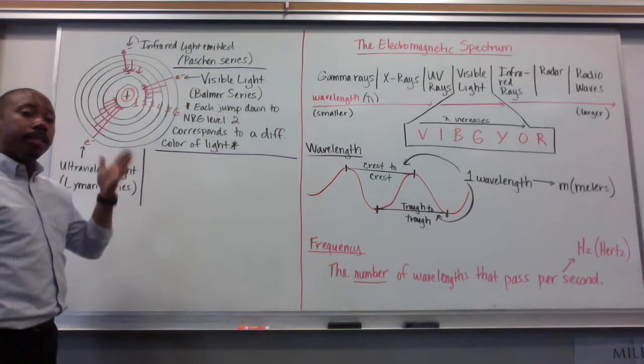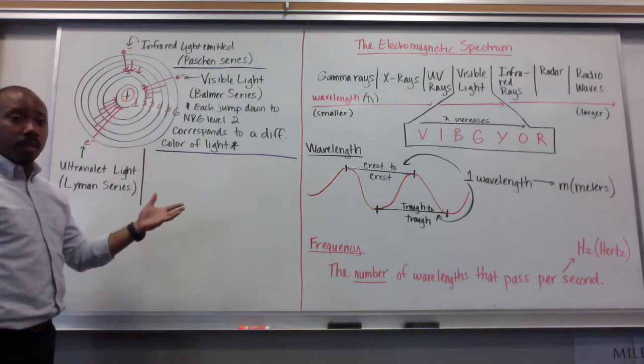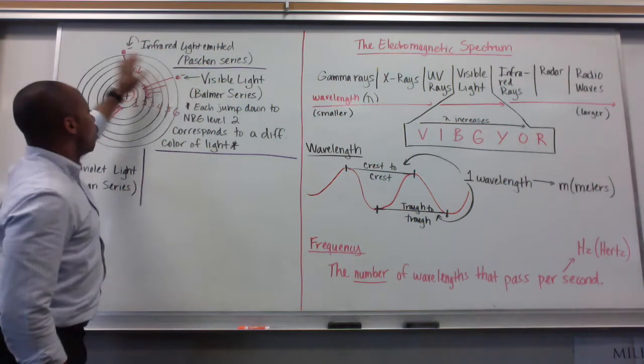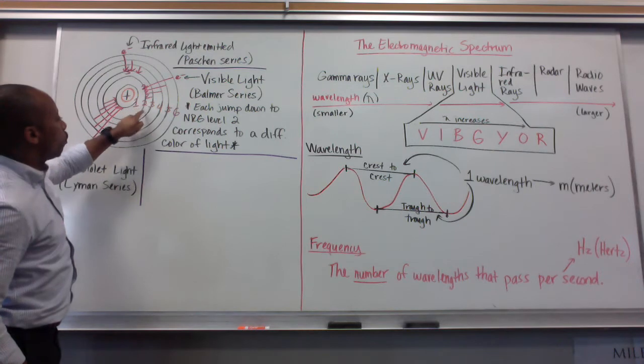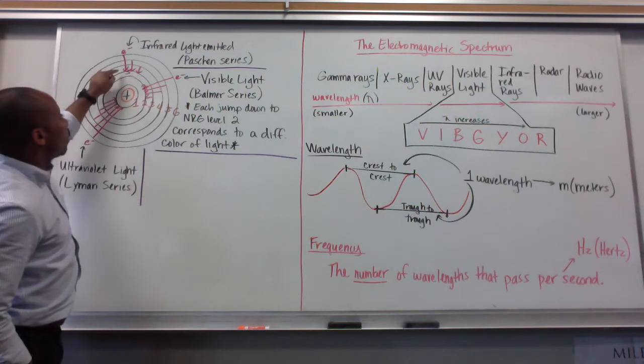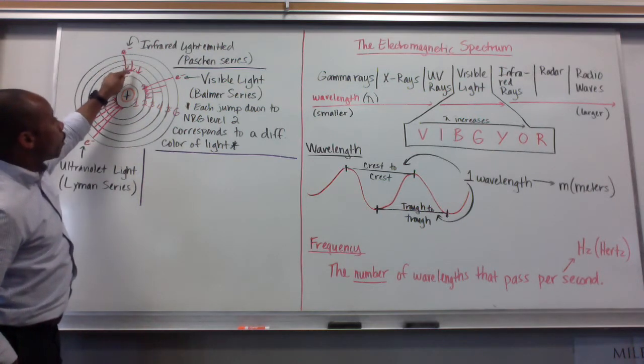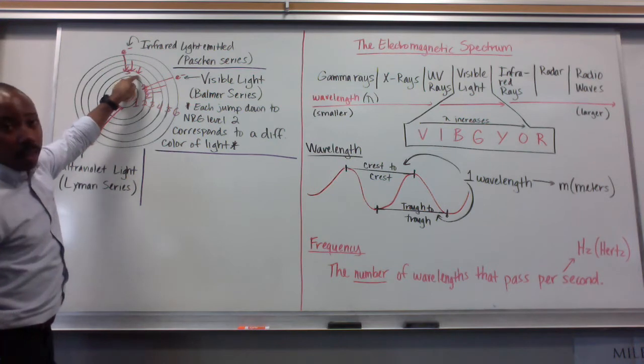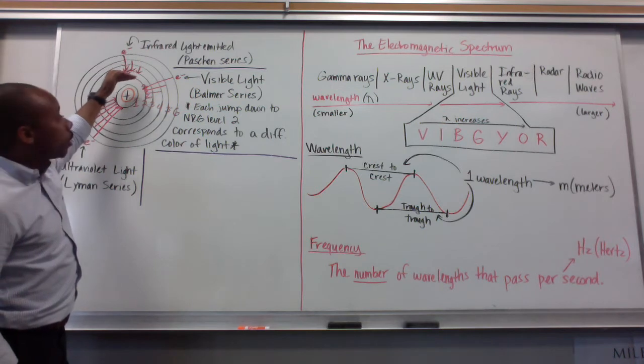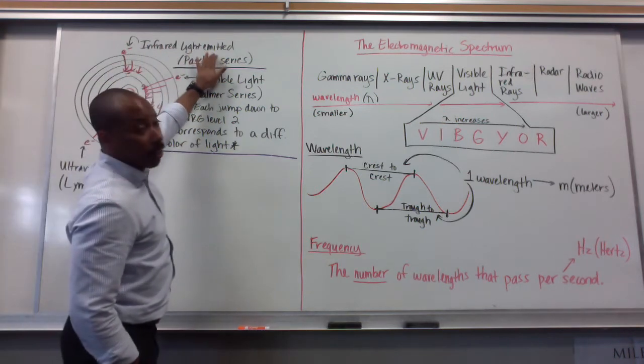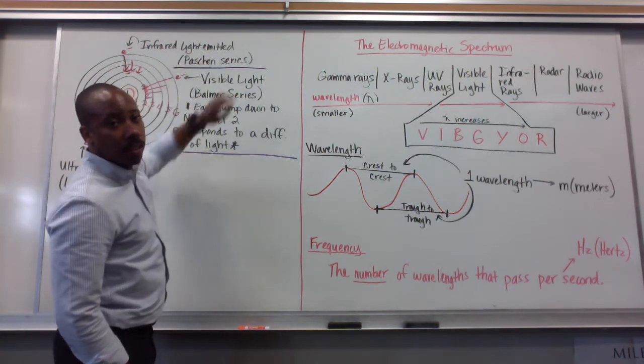The first is infrared light. When electrons go from energy level 6, they're labeled here 1, 2, 3, 4, 5, 6, down to energy level 3, or from 5 to 3, or from 4 to 3, that energy associated with that electron jump downward is infrared light. We call this the Paschen series.